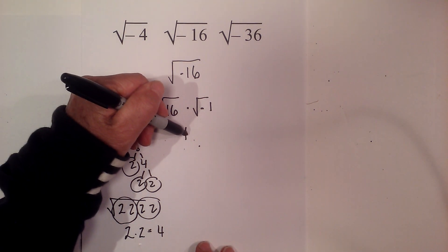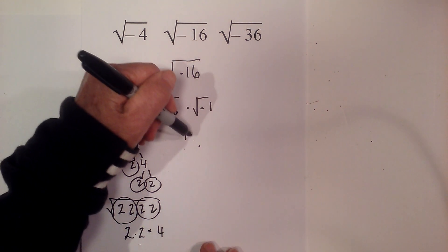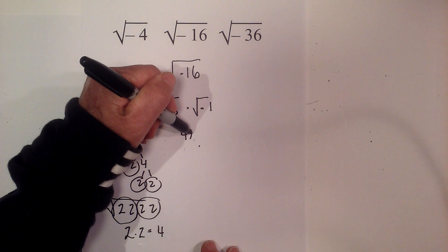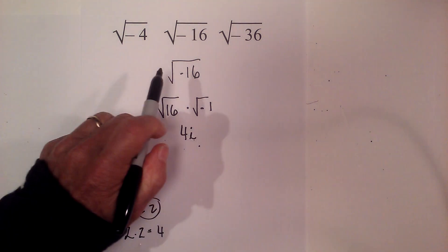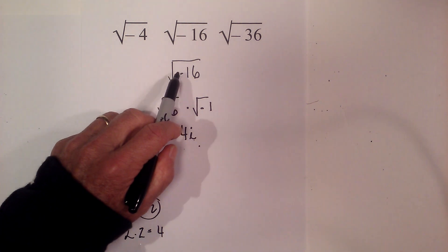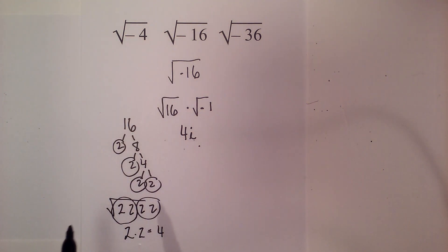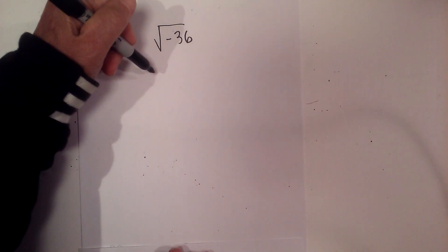So the square root of 16 is 4, and the square root of negative 1 is i. The simplified answer for the square root of negative 16 is 4i. Let's work one final one — let's find the square root of negative 36.